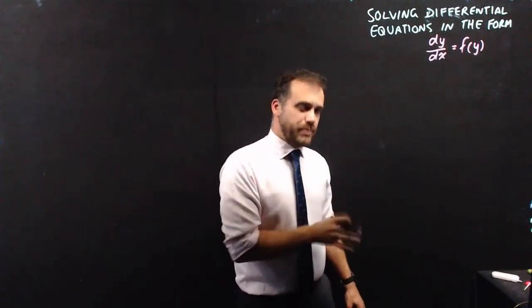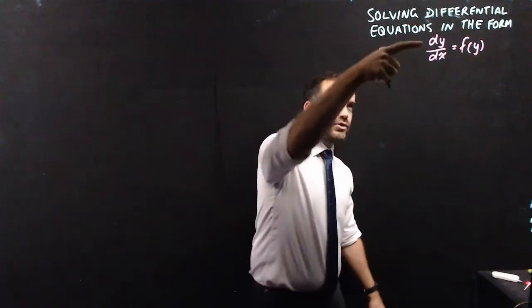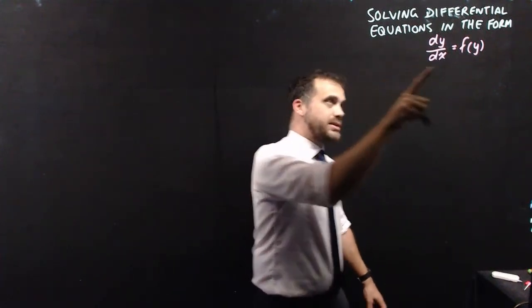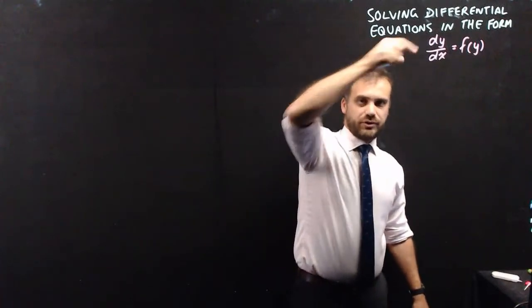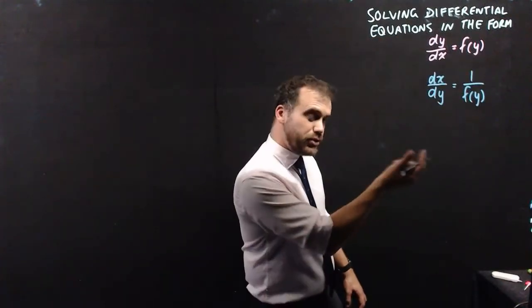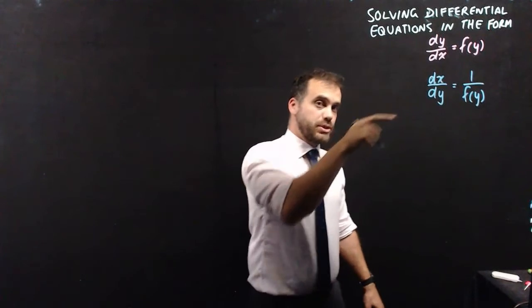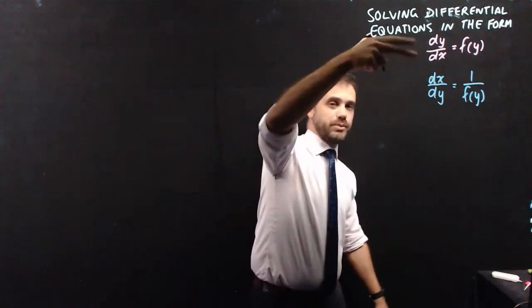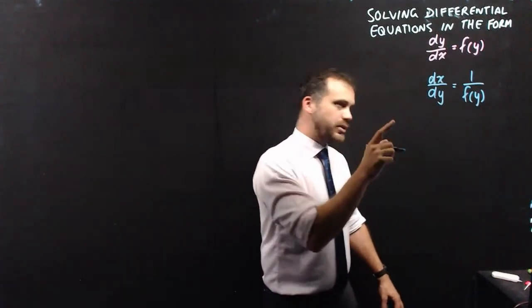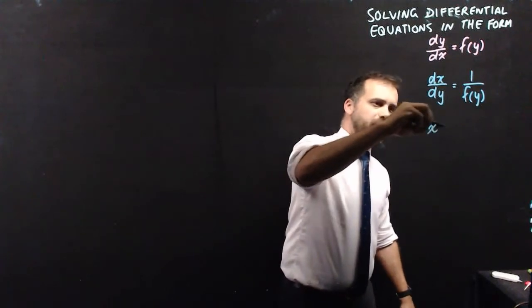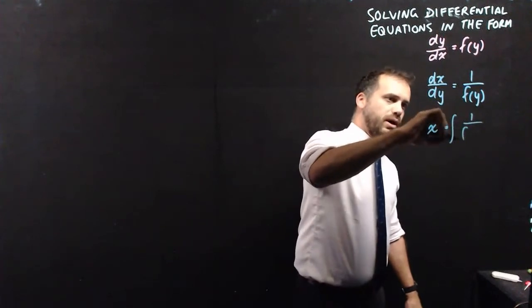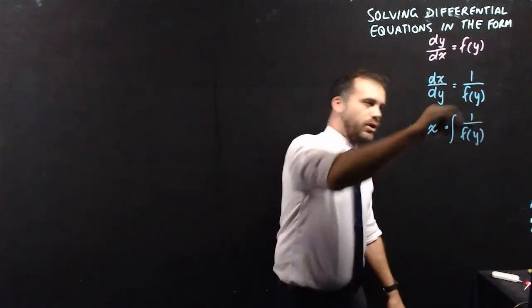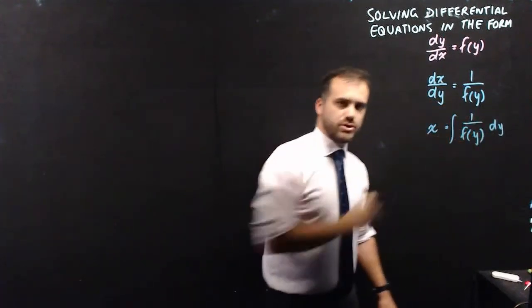So first, the theory that's going to underpin this video. If we've got the derivative of y with respect to x as a function of y, we can take the reciprocal of the left and right-hand sides. When we do that, we've got the derivative of x with respect to y, the reciprocal of what we started with. Now once we've got that, we can solve it for x by saying that x, by itself, will be equal to the integral of 1 over f of y with respect to y.